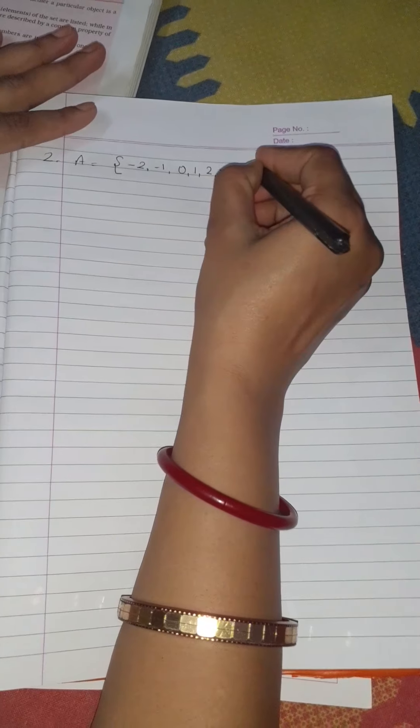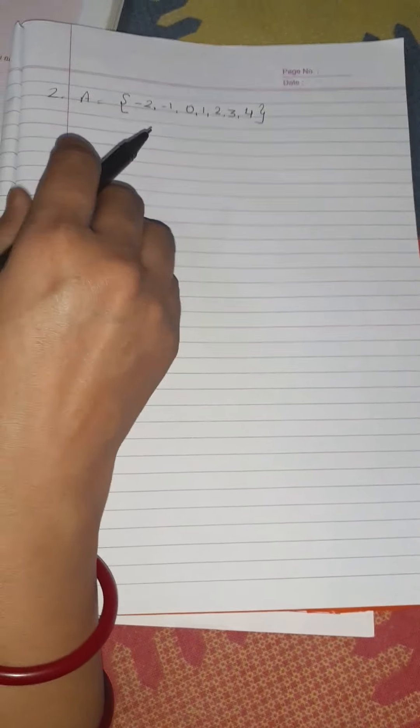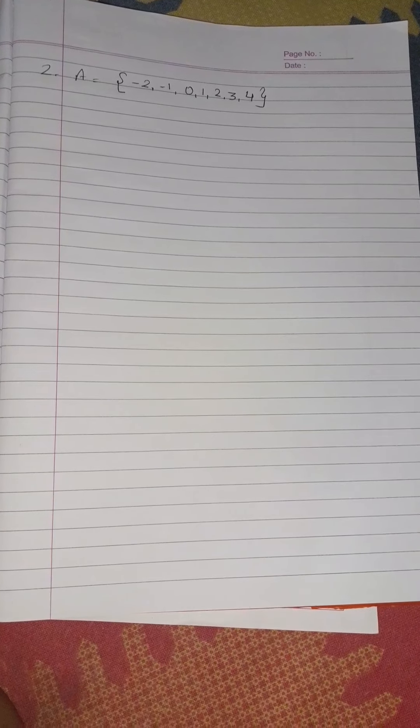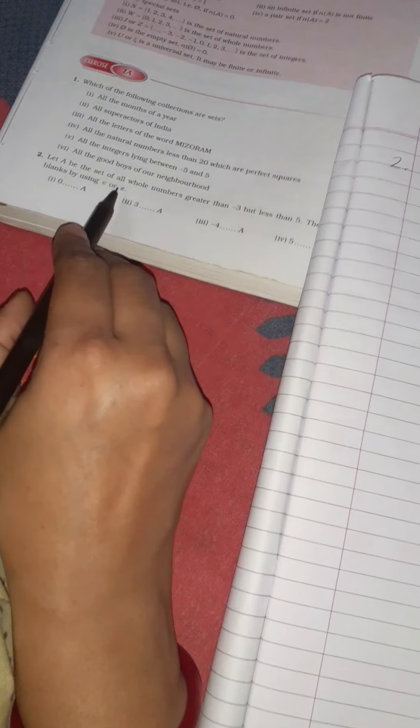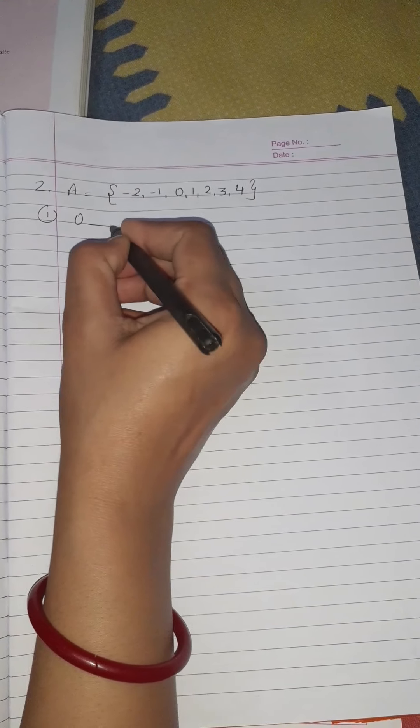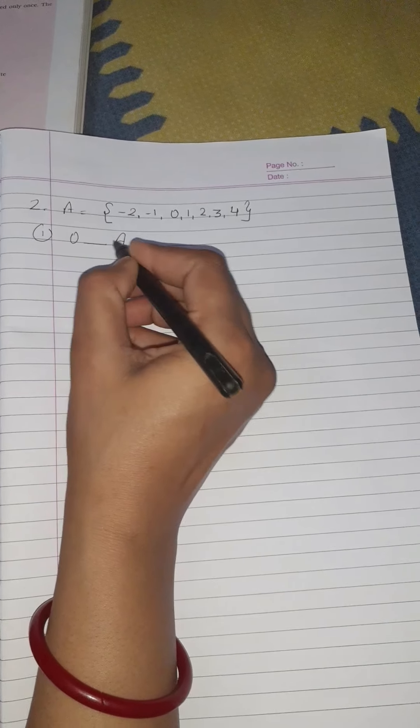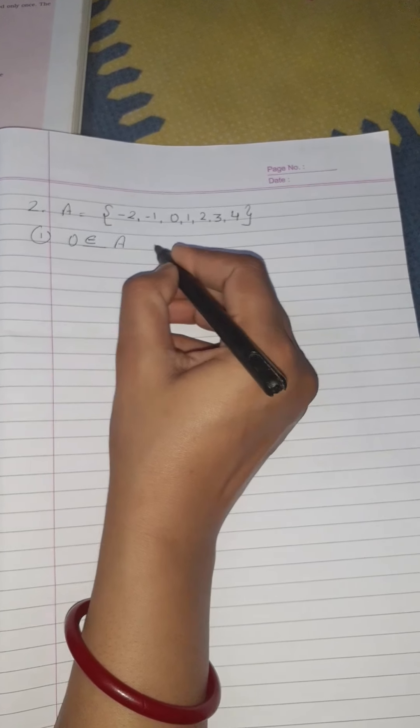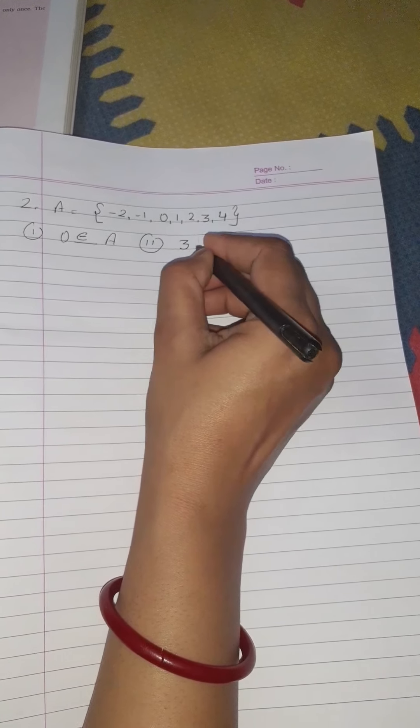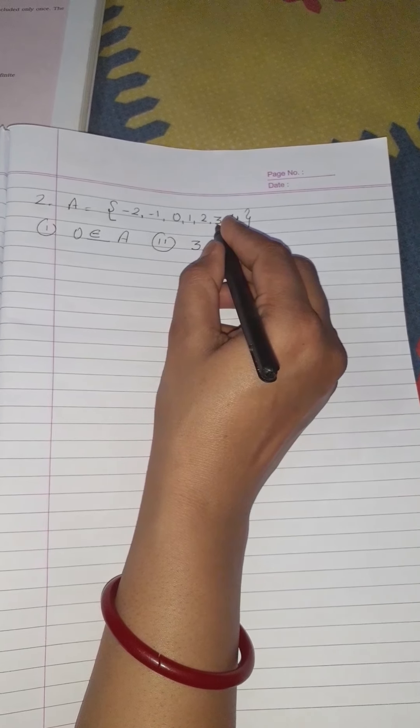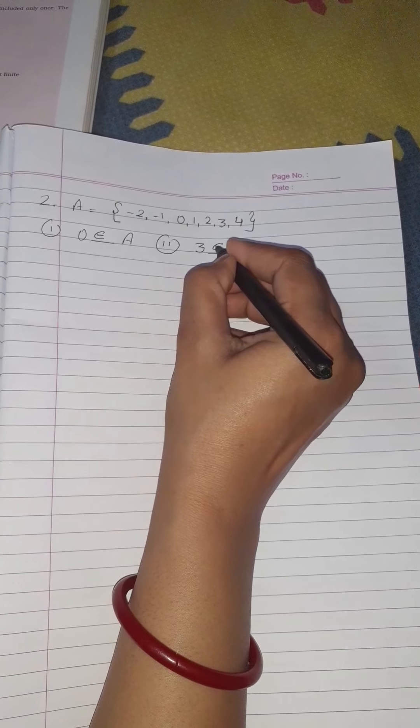Fill in the blanks by using the symbol belongs to (∈) or does not belong to (∉). In the first question it is asking: does 0 belong to A or not? Obviously 0 is in the set A, so it belongs to A. Question number 2: does 3 belong to A? Obviously 3 is also in set A, so it also belongs to A.